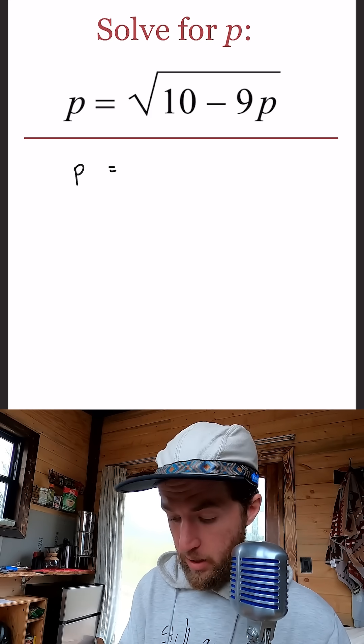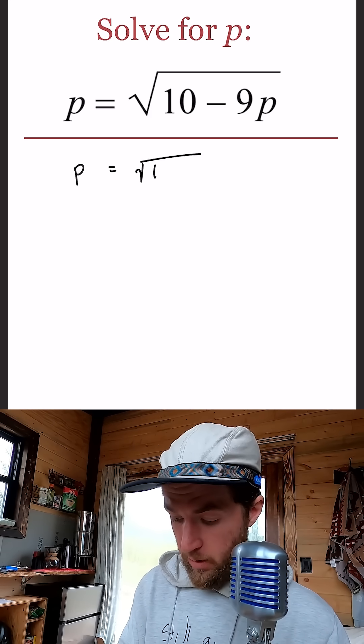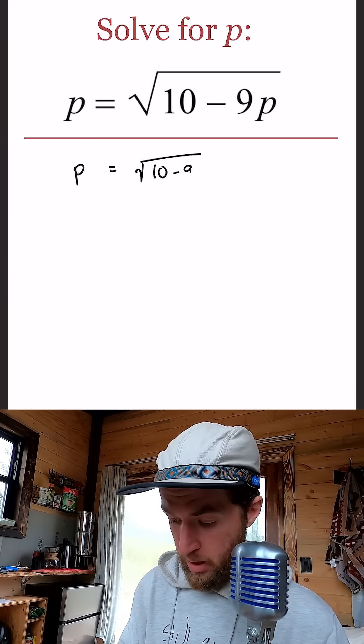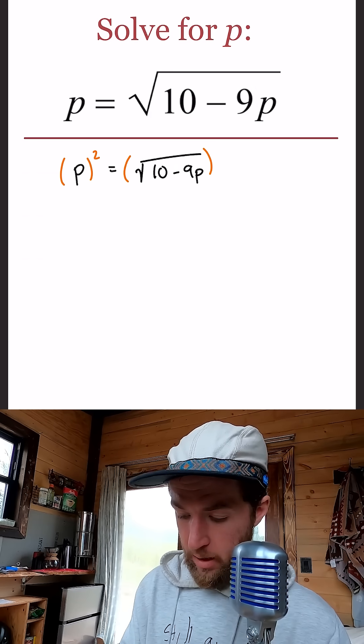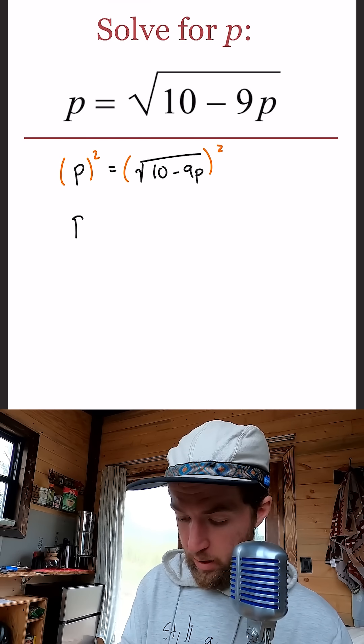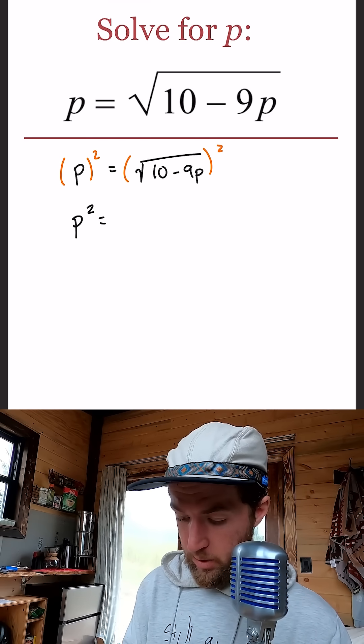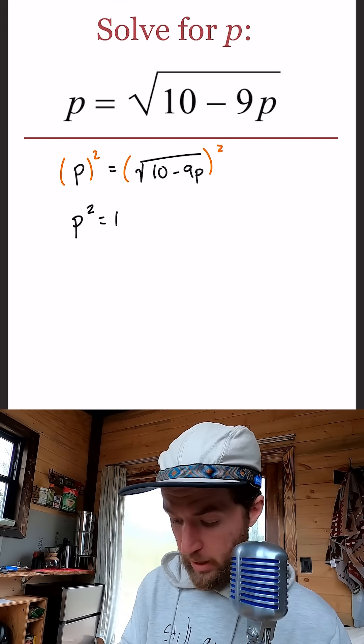So if we have P equals square root of 10 minus 9P, we want to get rid of that square root by squaring both sides. We can do just that. We'll get P squared equals what's on the inside of the square root, 10 minus 9P.